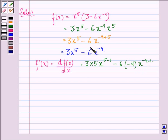This happens because 3 and 6, being constant, remain the same as is, and we know that derivative with respect to x of x raised to power n is equal to n into x raised to power n minus 1. So in the first term n is 5, in the second term n is minus 4, so we get this.